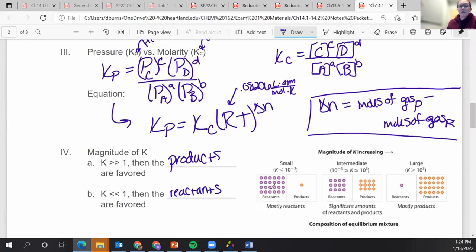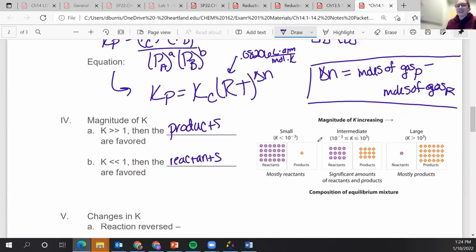I've got pictures of that over here. Essentially, if it's really small, like 10 to the negative third or smaller, I have mostly reactants. If it's 10 to the third or bigger, it's mostly products. And anything in between, I have reactants and products present.